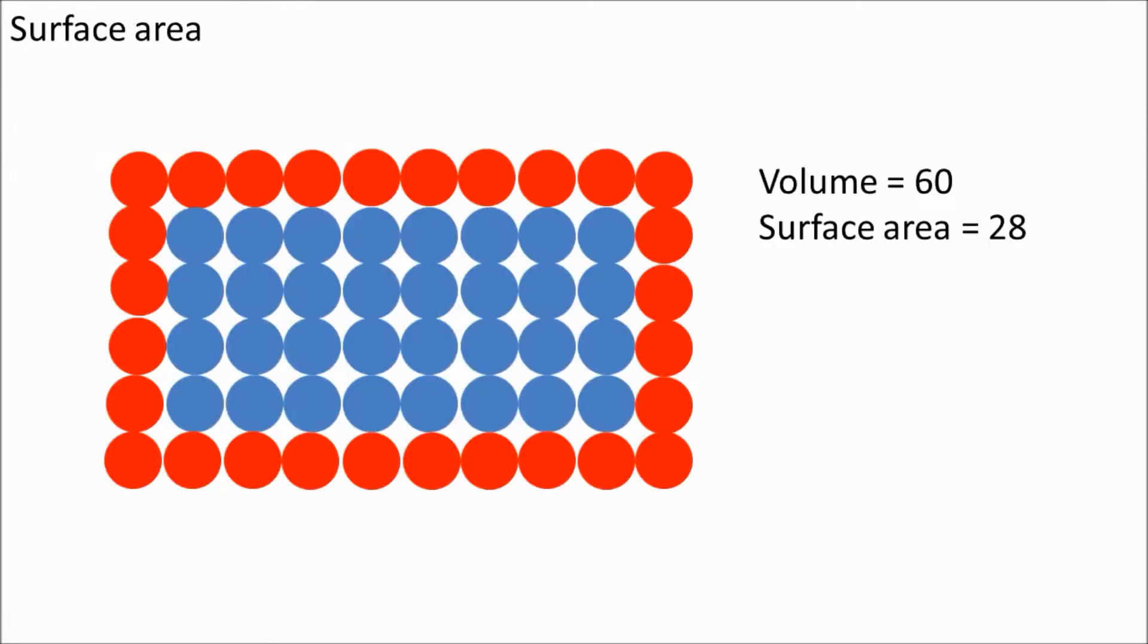In this diagram, we have 28 red particles on the outside, and they're the only ones that are available for the reaction to happen. All the others are trapped inside the solid where no collision can take place. So, this is the surface area. These 28 red particles on the outside, they are on the surface.